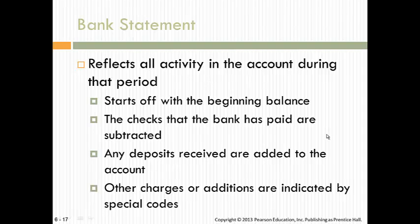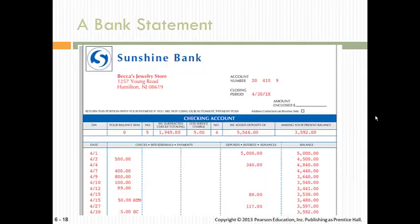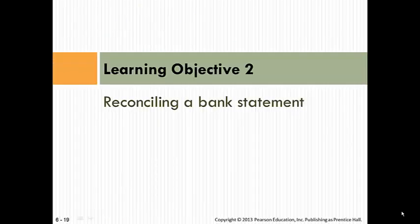Then there's a bank statement, which reflects all the activity in the account during that period. It starts with the beginning balance, then the checks the bank has paid are subtracted, deposits are added, and other charges or additions are indicated by little codes. Here's a sample bank statement showing checks subtracted, deposits added, your present balance, and your beginning balance — all the different information that flows through a bank statement.